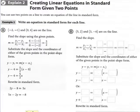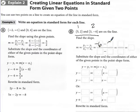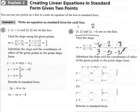Now we're going to create linear equations in standard form given two points. Since we're not given the slope, we have to find it. Here we have our two points. I'm going to make one my point 2 and the other my point 1. So I have negative 6 minus 2 over 3 minus 5. Negative 6 minus 2 is negative 8, and 3 minus 5 gives negative 2. Negative 8 divided by negative 2 gives me a positive slope of 4.